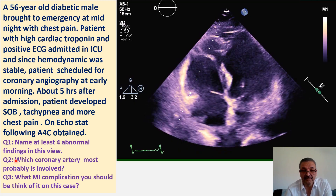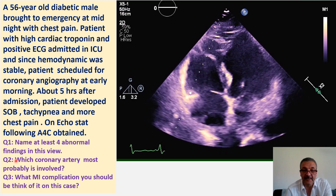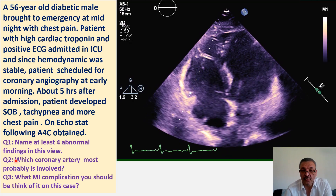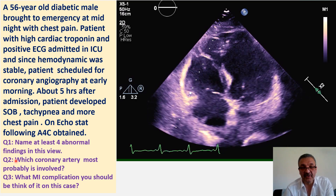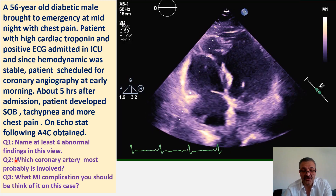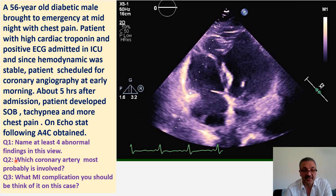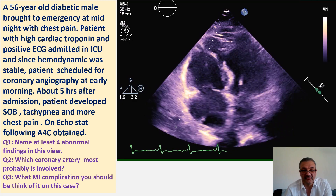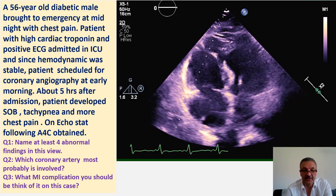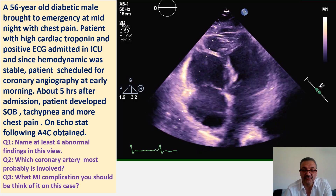An echo was performed on the patient. The apical four-chamber view has been taken. Question one: name at least four abnormal findings on this view. There are more, but can you give me the names of four significant and very obvious findings?